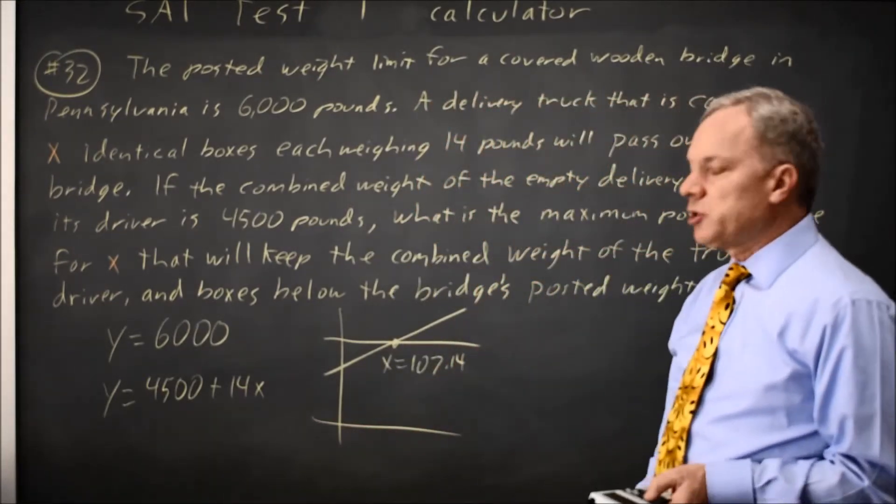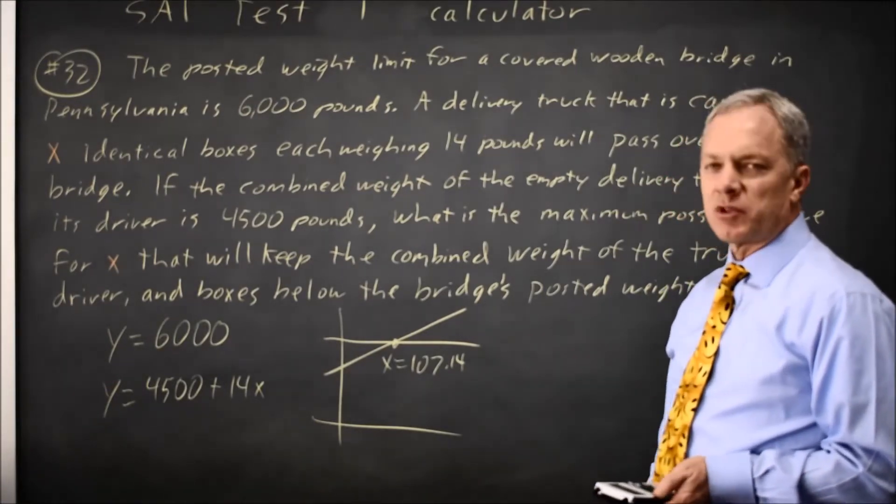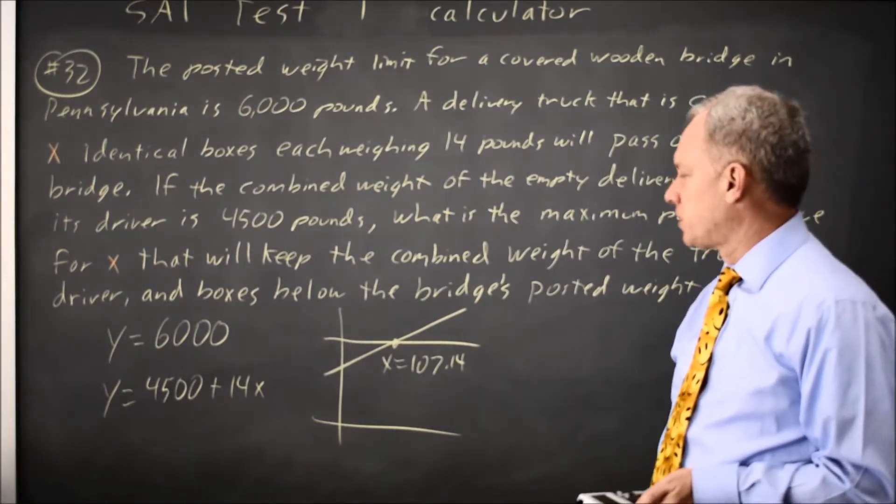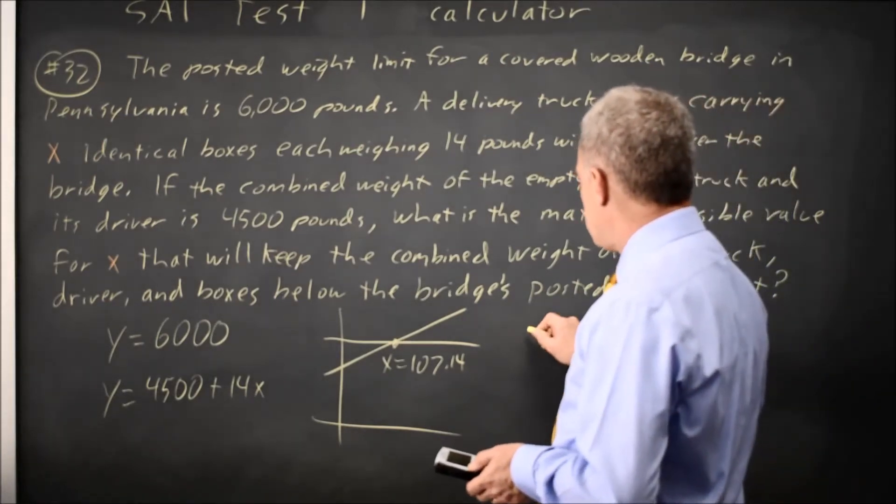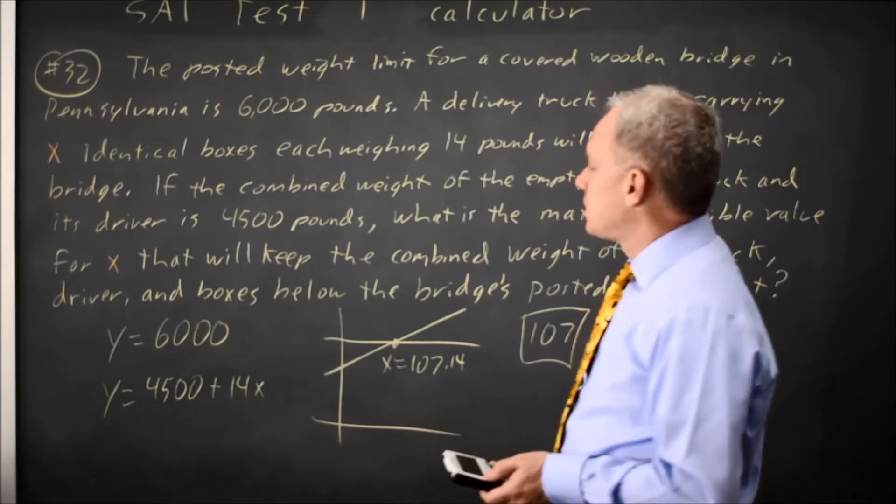If I round up to 108 boxes, which is mathematically wrong, that's also wrong for the words of the problem, because my weight will be over 6,000 pounds, so I'll round down to 107 boxes, which makes sense.